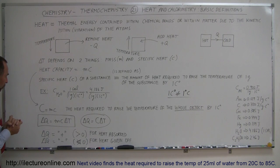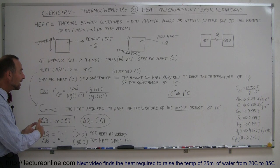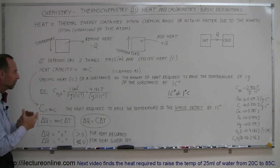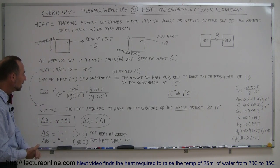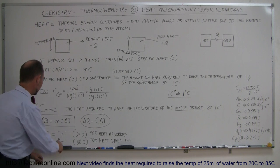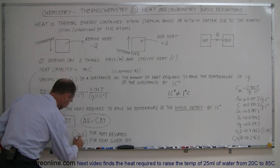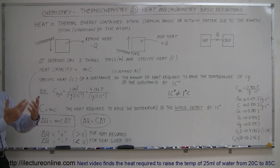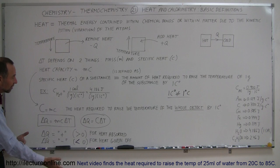Delta Q is considered positive if heat is absorbed — if the object absorbs heat, that's a positive delta Q. If the object gives off heat, that's a negative quantity, meaning delta Q is less than zero, and the temperature of the object goes down. So if an object absorbs heat, temperature goes up; gives off heat, temperature goes down.